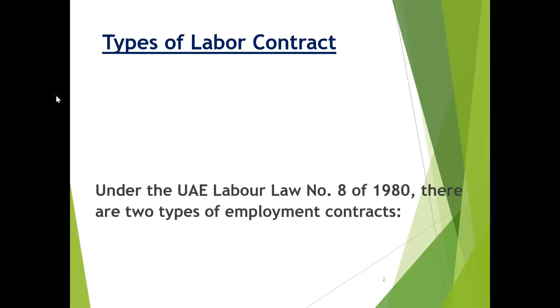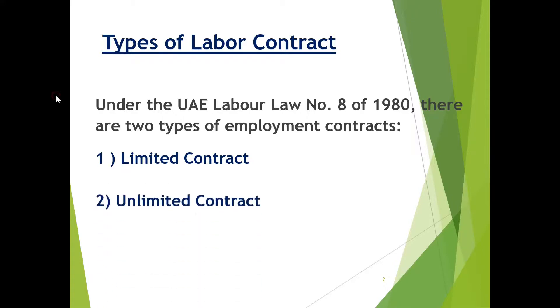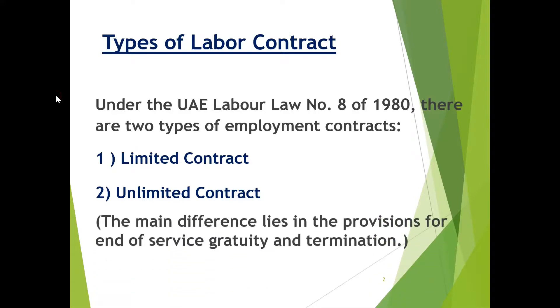Types of labor contracts. There are mainly two types of labor contracts that companies are using to hire employees: one is a limited contract and the other is an unlimited contract. The main differences between both types of contracts lies in the provisions for end of service and termination.